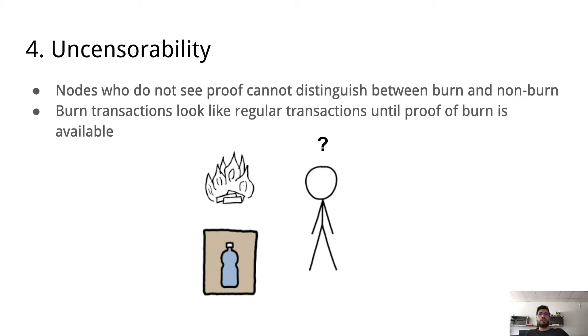Then we have uncensorability, which basically we need to say that people who observe these transactions are not able to distinguish them as burn transactions. There might be many reasons to do this. For example, one could imagine that miners of a cryptocurrency may not like that people burn, and they may think this would impact their usage of the chain they're mining on, and they could try to censor such burn transactions. So we think this is also an important property.